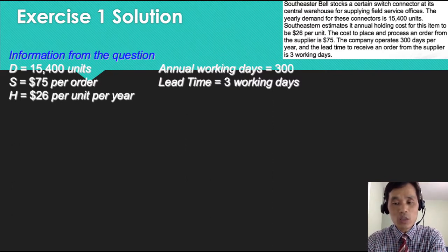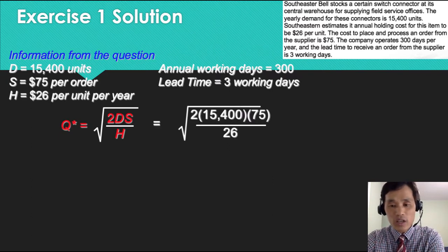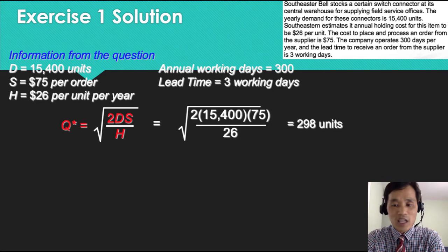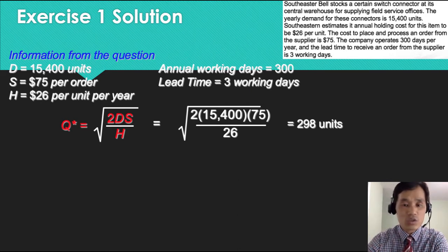Then you can calculate EOQ using the formula Q star equals square root of 2 times D times S over H. Plug in DSH that you found from the question and you will find that the Q star is 298 units. This is the EOQ.